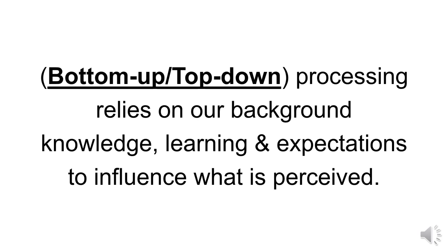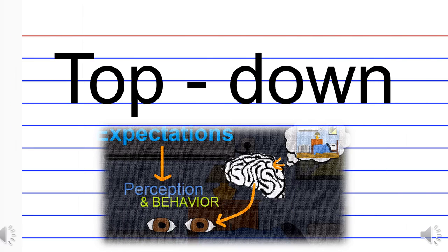So is this bottom-up or top-down? That's right, you guessed it, it's top-down processing. The example is you're able to walk through your room successfully in the dark. That's because you already have a mental construct, a concept of what the layout of your room is, so you don't need to have the lights on. Based on your expectation of where everything is located, this dictates your perception and your behavior or how you walk around the room in the dark without tripping over anything.